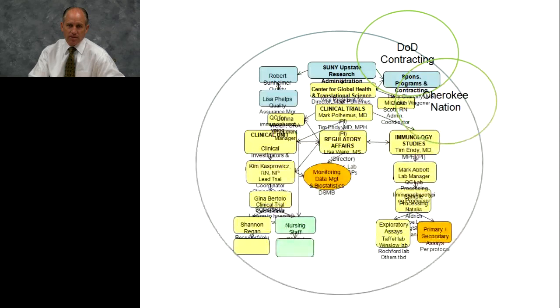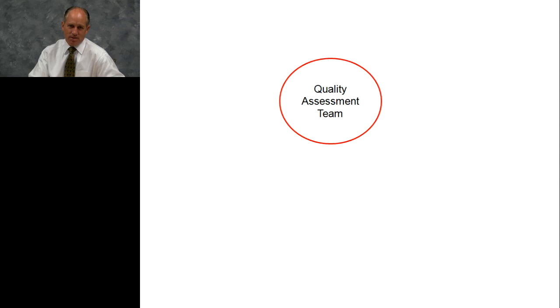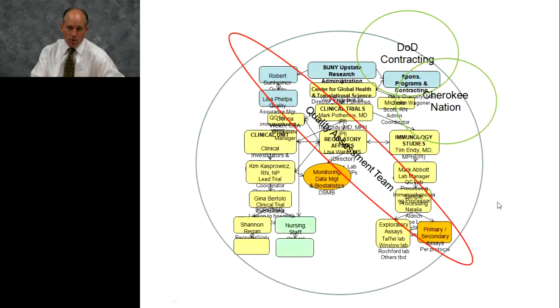Then we had a quality assessment team come in — folks who do quality for a living. They speak quality, they think quality, they act quality, they write quality. A single line, initial and date when they're writing letters home to mom. They came in to look at us from top to bottom, from our quality programs all the way through our regulatory processes, all the way down to the individual stuff being done in the lab. Multiple interactions across multiple levels.